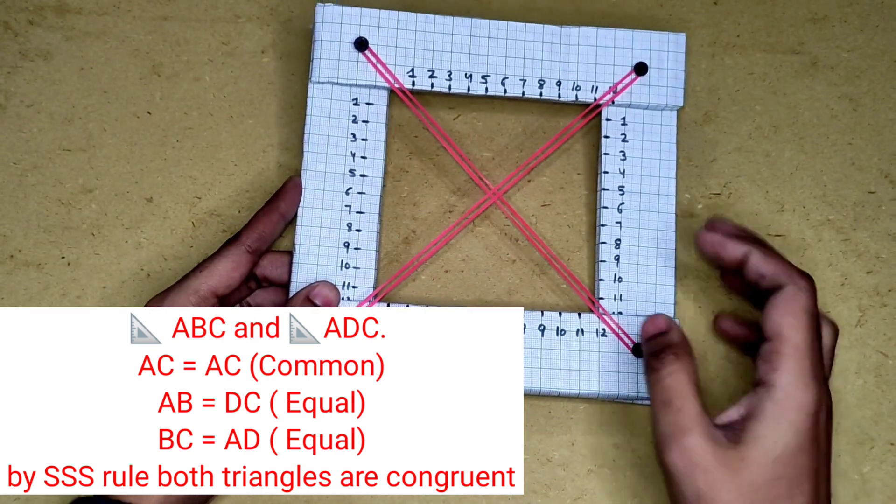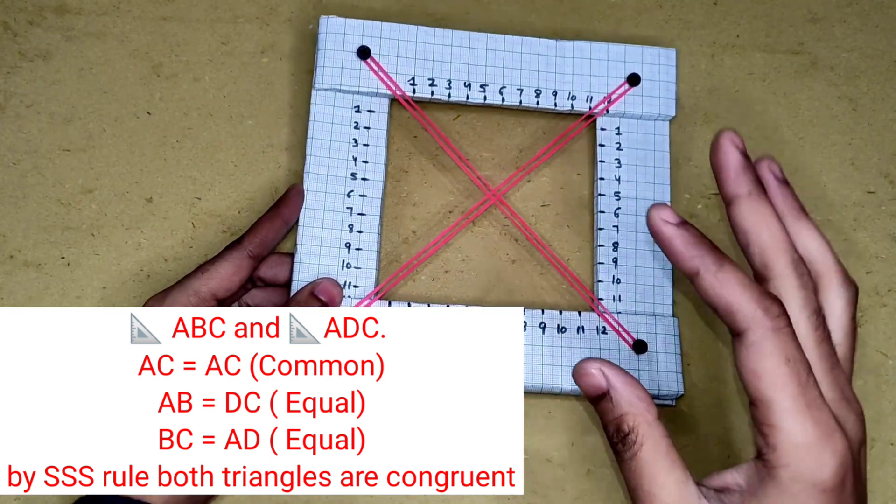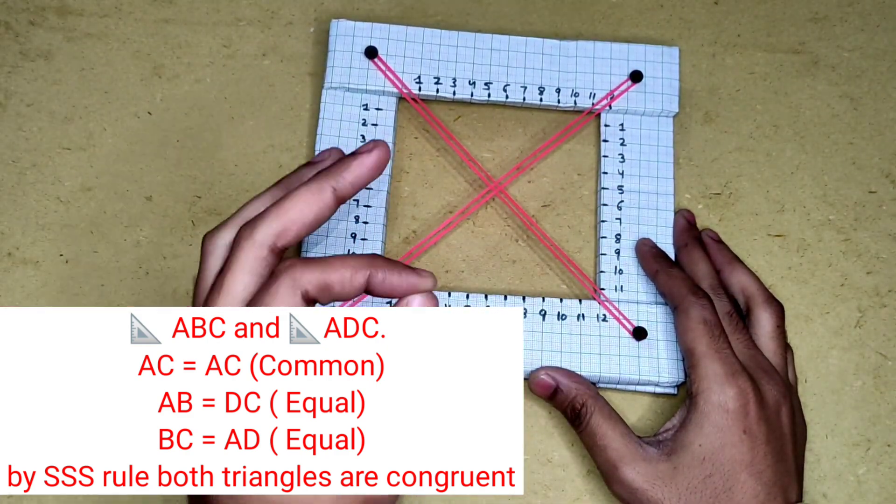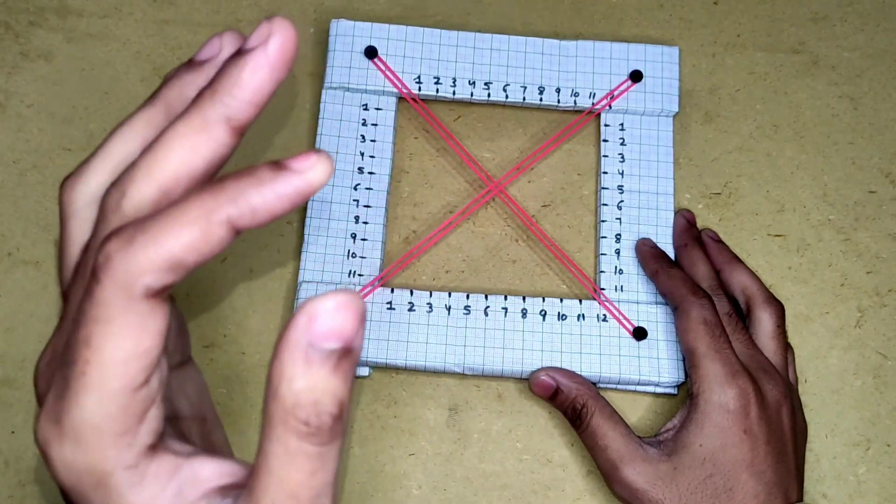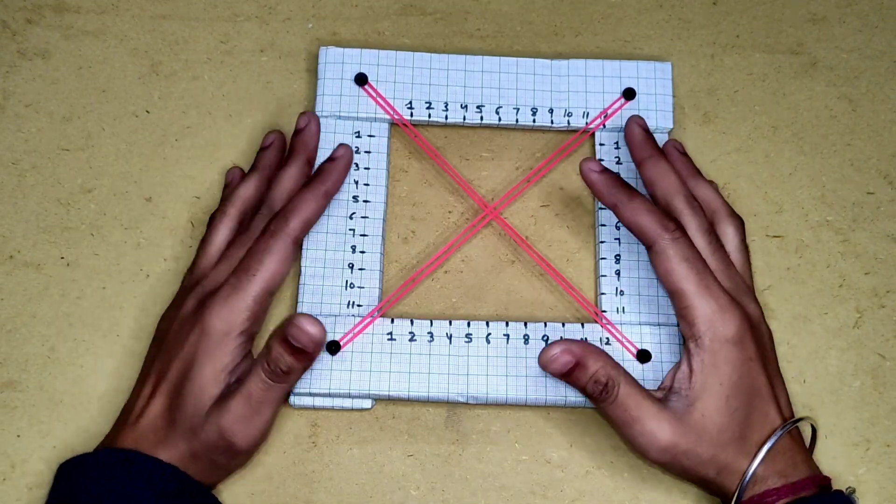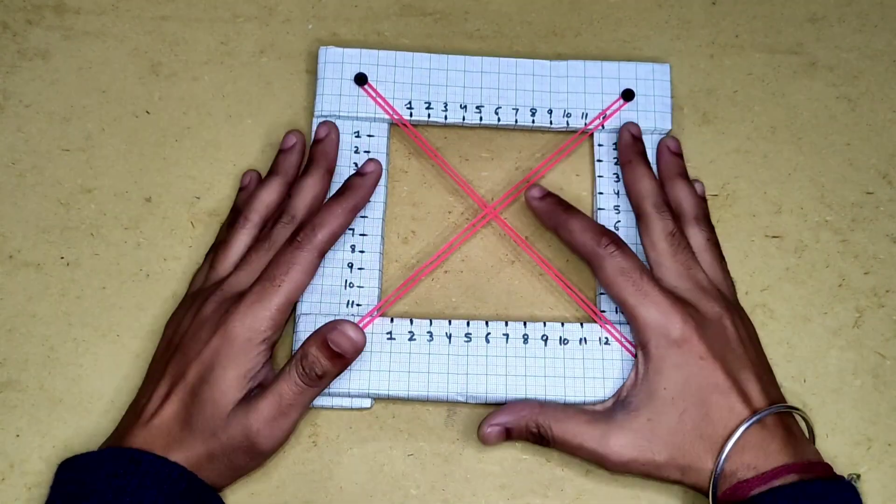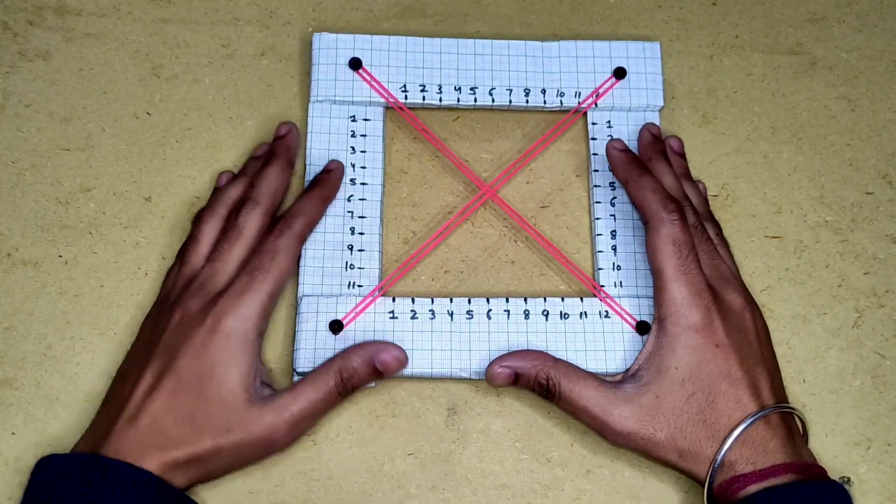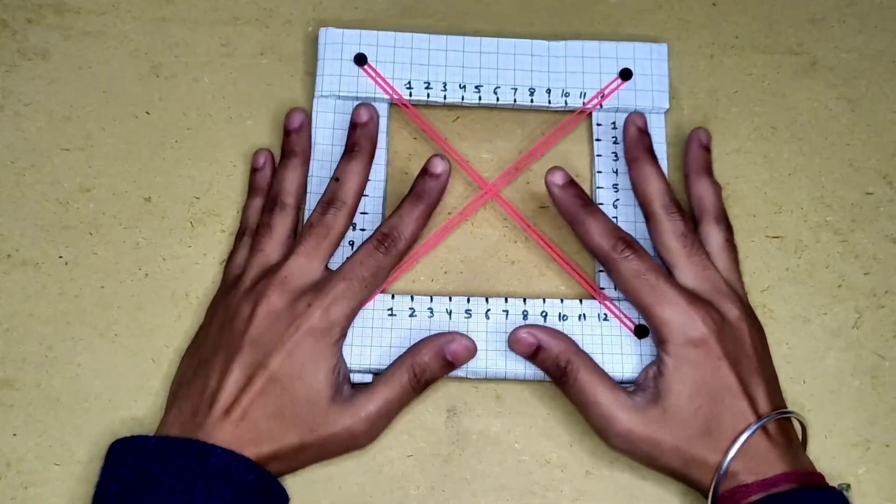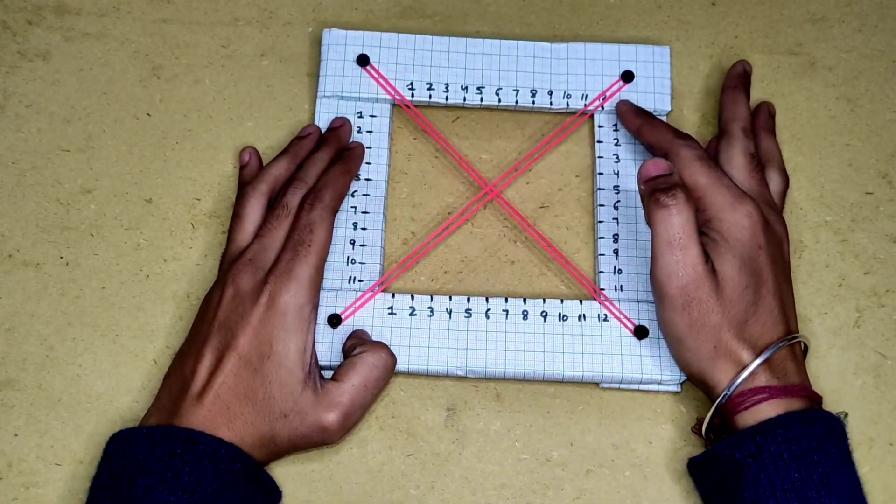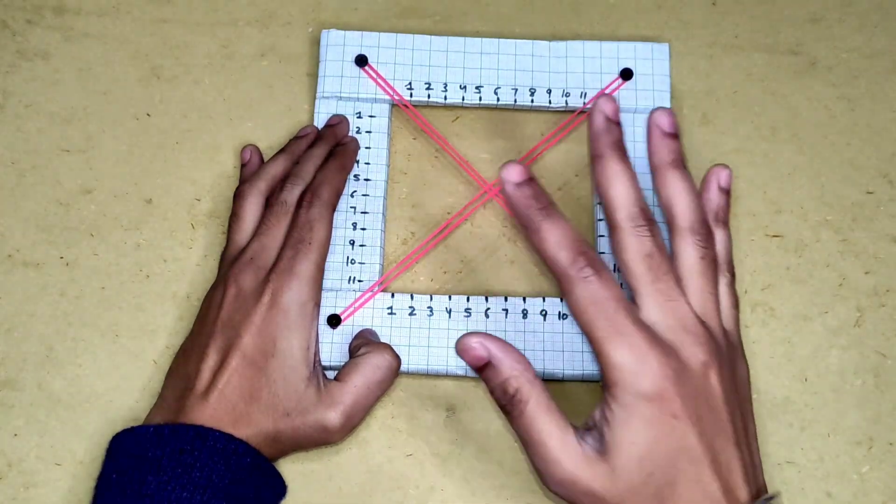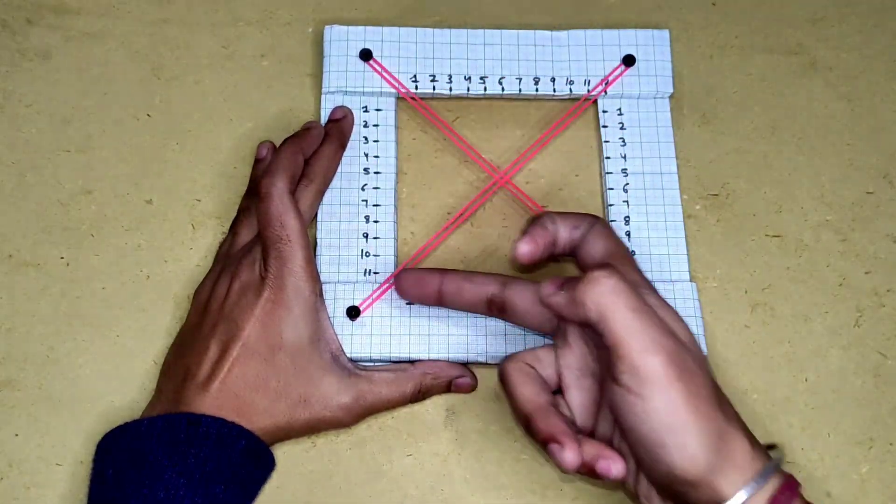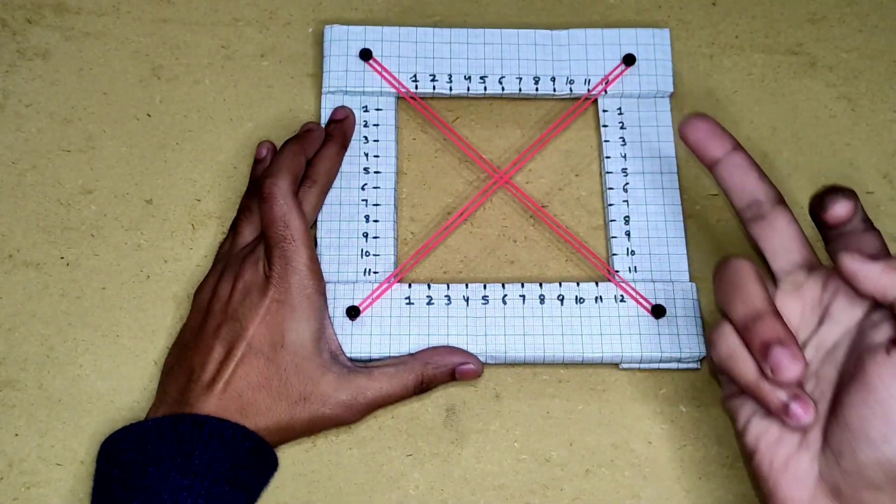So here we can see that the SSS rule can help us to prove the congruency of two triangles. If these two triangles are congruent, their other parts are also equal. Like their angles are also equal. If we check, this forms a perfect scale. This is 90 and this is 90. So all angles are 90 in the square. So this is 90 and this is 90. The angle ABC is equal to angle ADC.